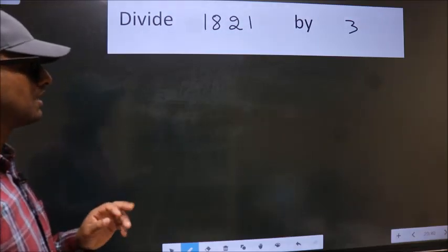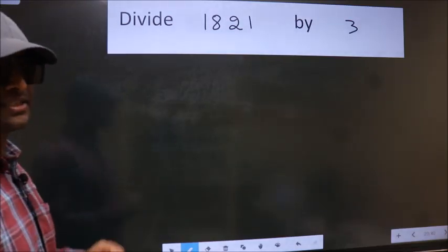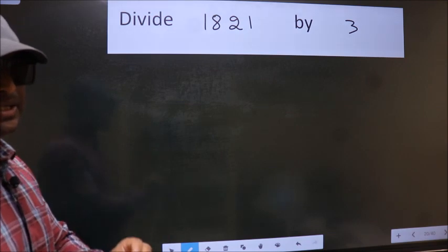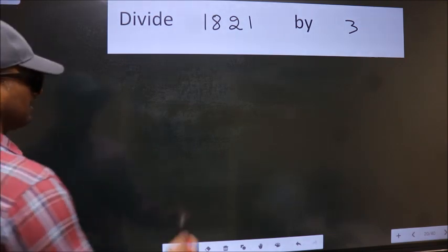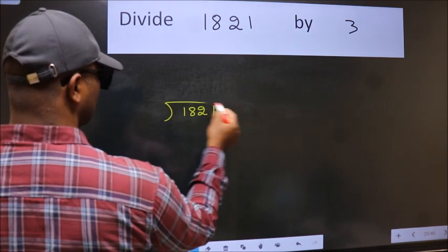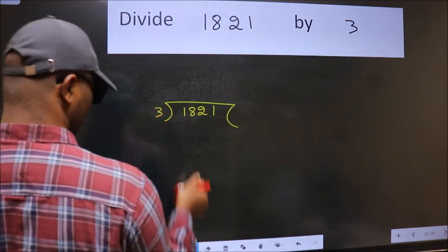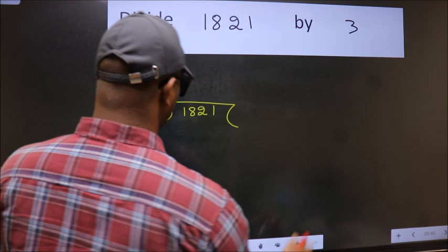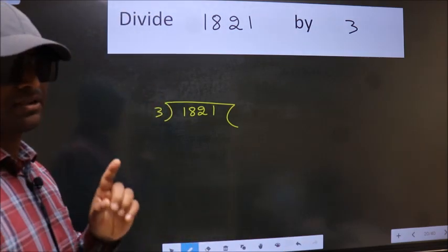Divide 1821 by 3. To do this division, we should frame it in this way. 1821 here, 3 here. This is your step 1.